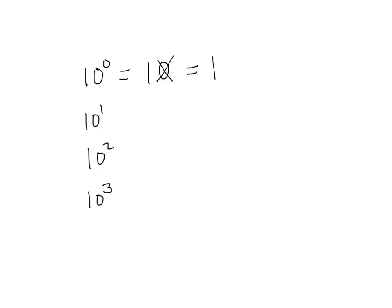10 to the first is 10 with 1 zero. 10 to the second power is 10 with 2 zeros, so that is 100 — 2 zeros. And so 10 to the third is a 1 and how many zeros? Three.